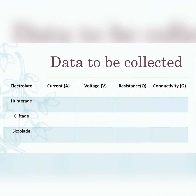For data to be collected, it's always good to use a table. Your table should include the three electrolytes, the current obtained from the experiment, the voltage, the resistance which you'll calculate, and the conductivity. This is how you record the data you'll be collecting.